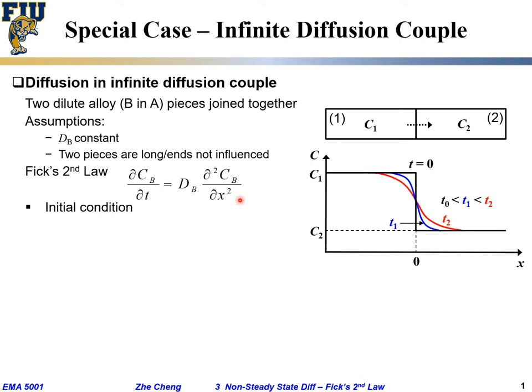What is our initial condition? To the left side we have constant concentration of c1. To the right side we have constant concentration of c2. That's our so-called initial condition when t equals zero.